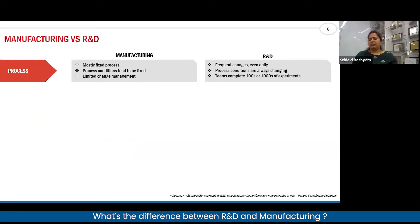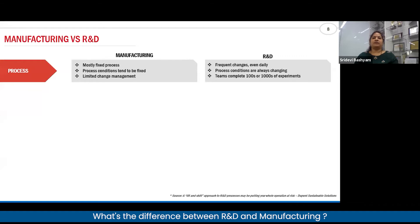Let's look at the challenges and risks faced by R&D in reality. In manufacturing, most processes are fixed — the process conditions are well established and change management doesn't happen very often. Whereas in R&D, there are frequent changes. We deal with unknown compounds and processes that change constantly. Sometimes we need to do hundreds or thousands of experiments within a month or a year. That is the major difference.